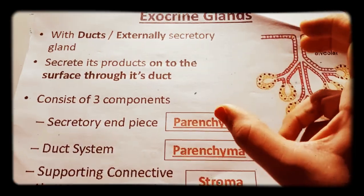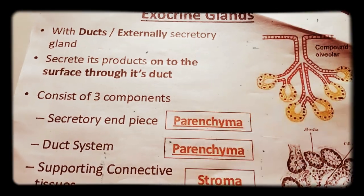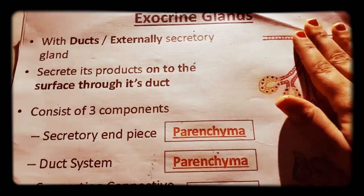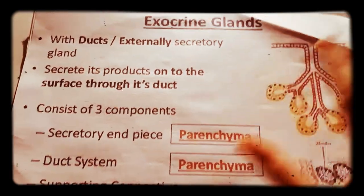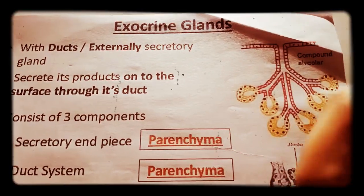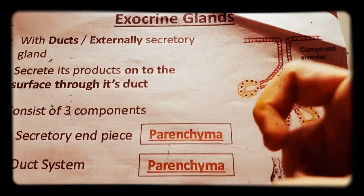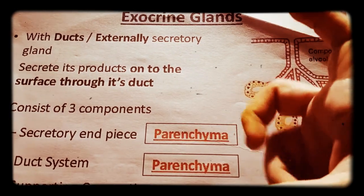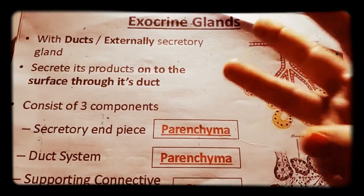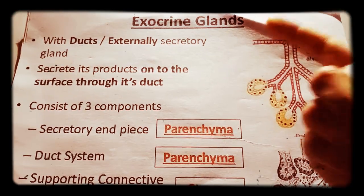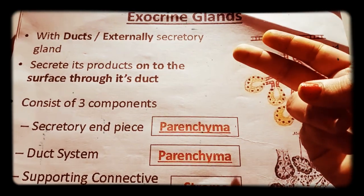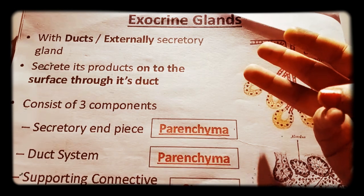We have seen all of the images of the glands and revised them quickly. Based on the first classification — the mode of secretion — we have three classifications: exocrine glands, endocrine glands, and paracrine glands.